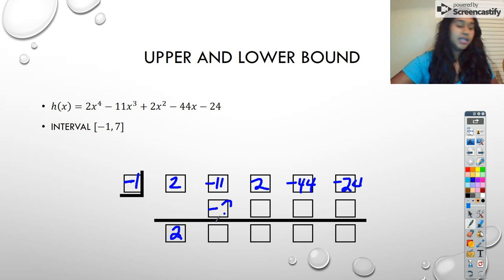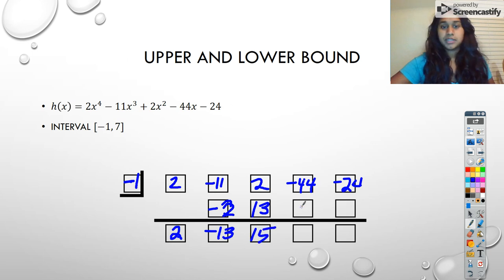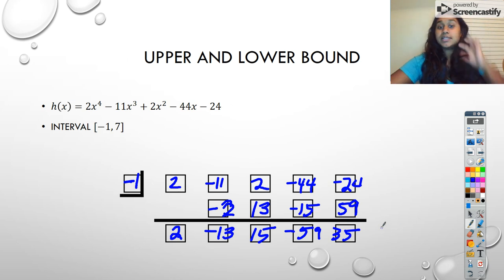That becomes negative 2, negative 13. I guess it would help if that was a 2, 13, 15, negative 15, negative 59, positive 59. And as you can see, that's a 35, but we are no longer testing if this is a 0. We're testing here on that formal definition page.